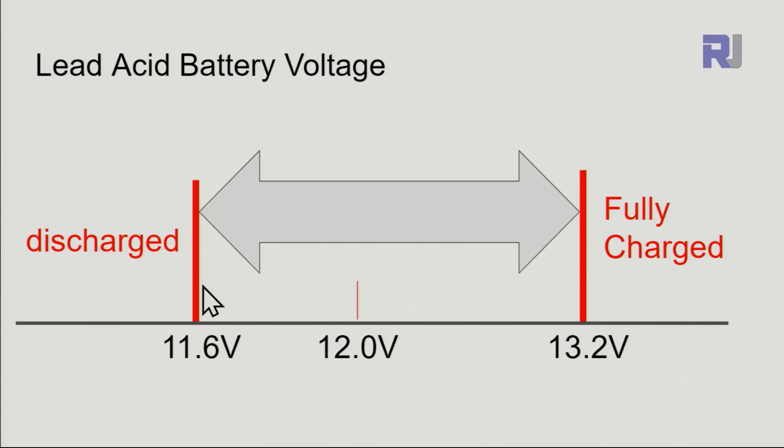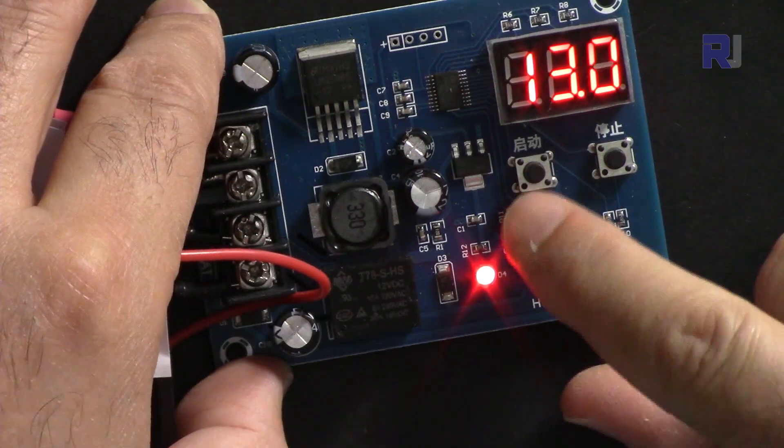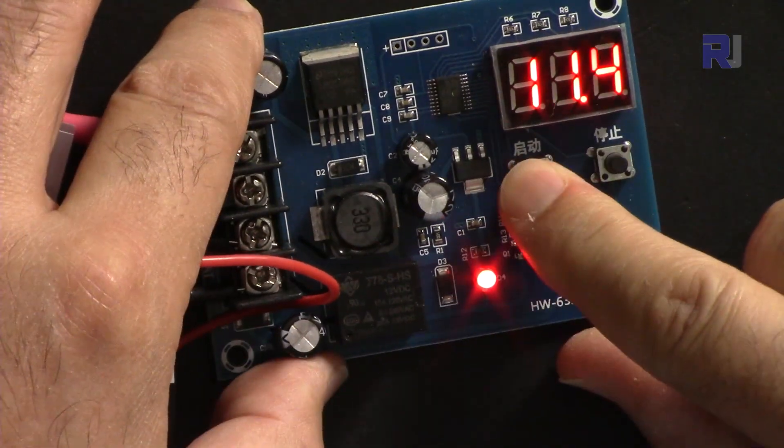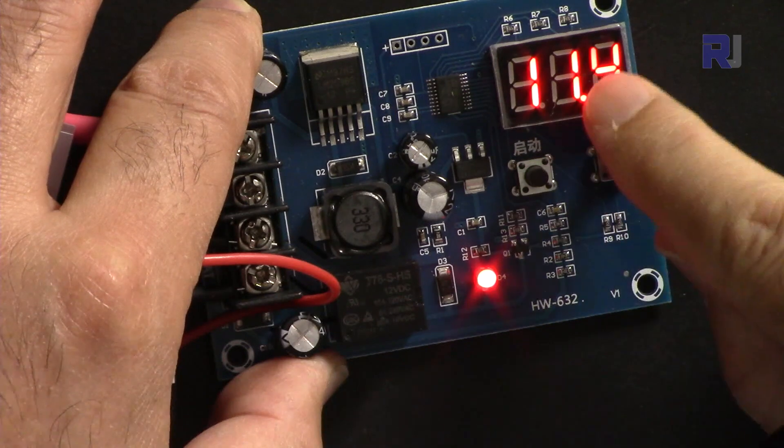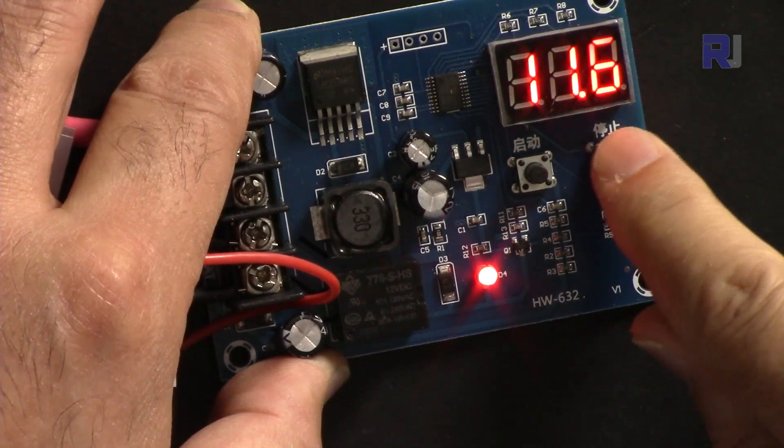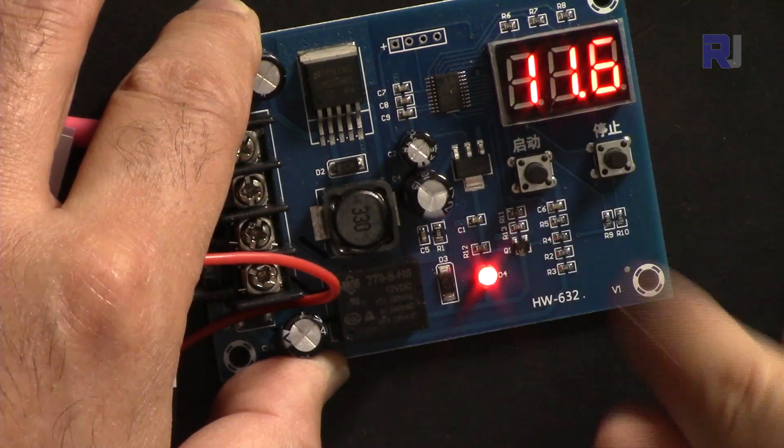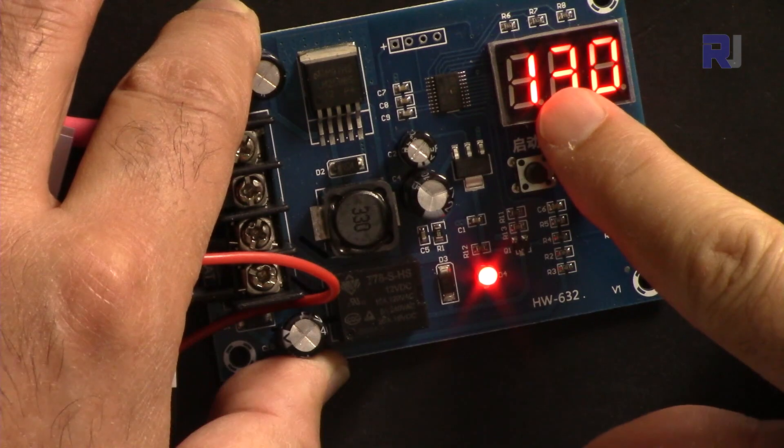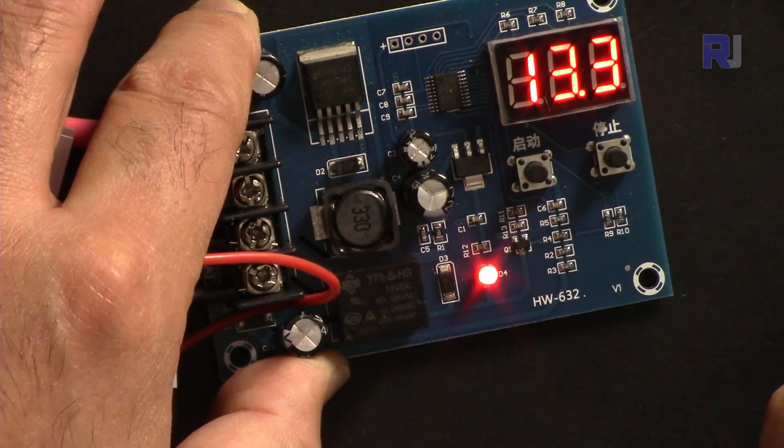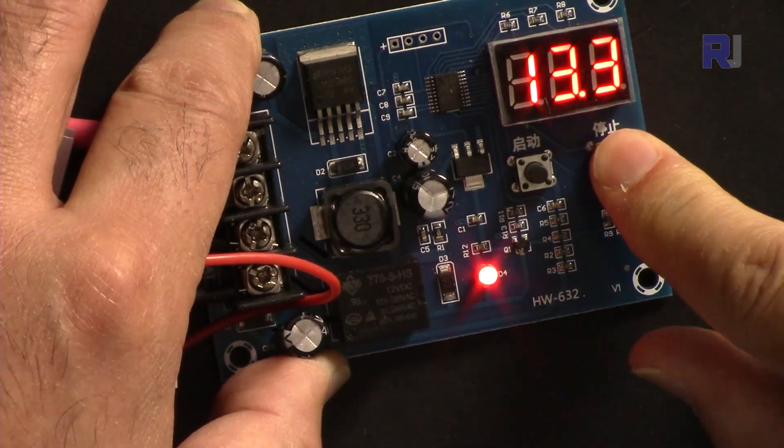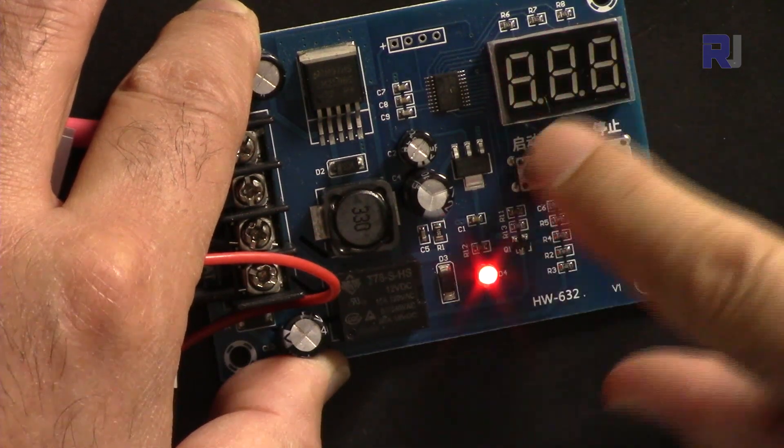Now let's set our start voltage to 11.6 volts. Press and hold this button until it blinks. This button increases and this decreases. Let's decrease it to 11.6 and wait until the blinking stops. That is done.